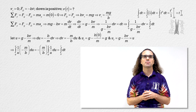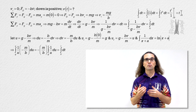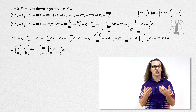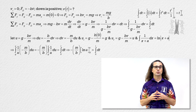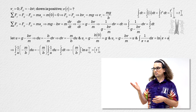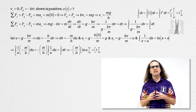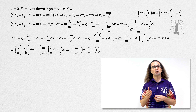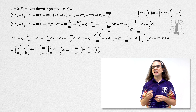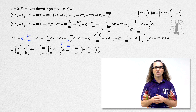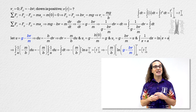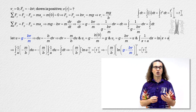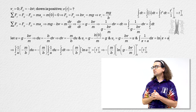Now we can take the integrals. The integral of 1 over u with respect to u equals the natural log of u. The integral with respect to time equals time. We still have our limits of g, u, zero, and t. However, now we can substitute back into our equation what u is equal to and change those limits again to zero and v instead of g and u. Bo, please continue from here.